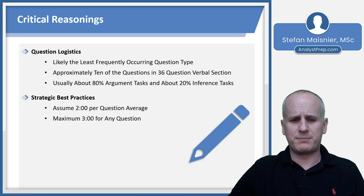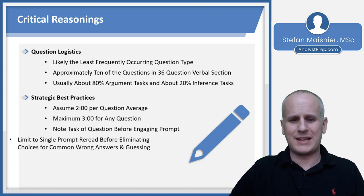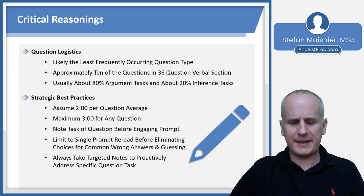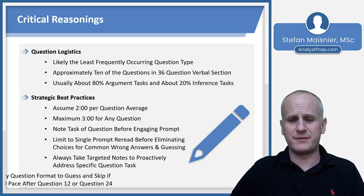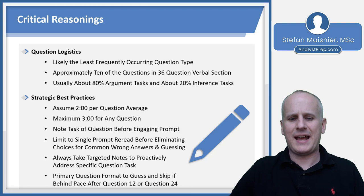You're going to want to spend a maximum of three minutes for any critical reasoning question. Note the task of the question before you engage the paragraph prompt, and limit yourself to a single prompt reread before you move to eliminating and guessing based on common wrong answers. You'll always need to take targeted notes to proactively address your specific question task. This is the primary question format to guess and skip if you're behind pace after question 12 or question 24.